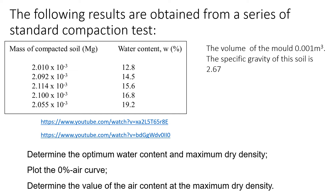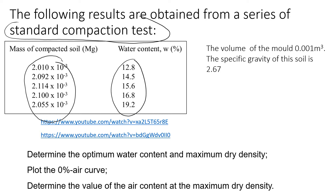This video will explain how to interpret and analyze results from a standard compaction test. There are five different test results shown here. We have data from the mass of compacted soil, and for each test we also obtain the water content. The volume of the mold is 0.001 cubic meters and the specific gravity of this soil is 2.67.